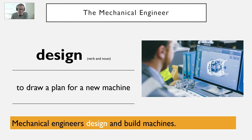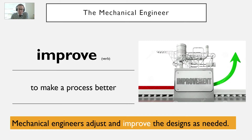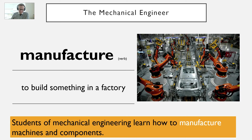Design. This can be a verb and a noun, and it has a G in the spelling which we don't say. To draw a plan for a new machine. For example, mechanical engineers design and build machines. Improve — to make a process better. For example, mechanical engineers adjust and improve the designs as needed.